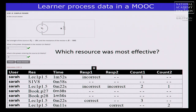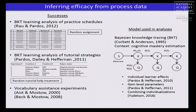Which resource was most effective? This is a question of interpretation — of the interpretable model. And even worse, it's really a question of causality. This is observational data, so can you get at this causal question? We'd love it if you could. I'm not going to answer it sufficiently, but I will tell you about some successes we've had in answering that question with other data sets — inferring efficacy from process data.